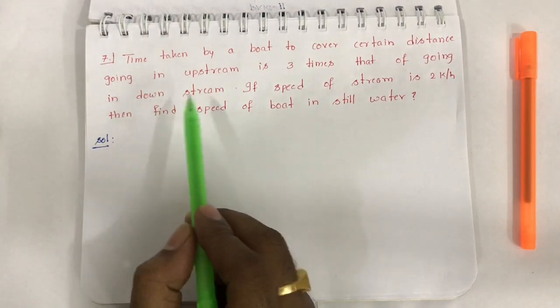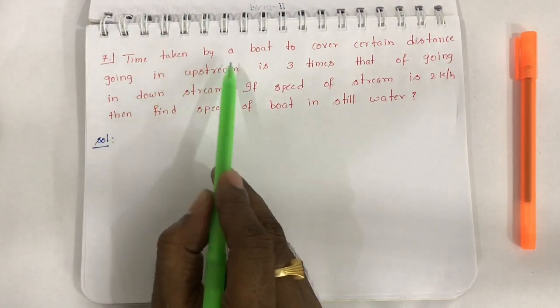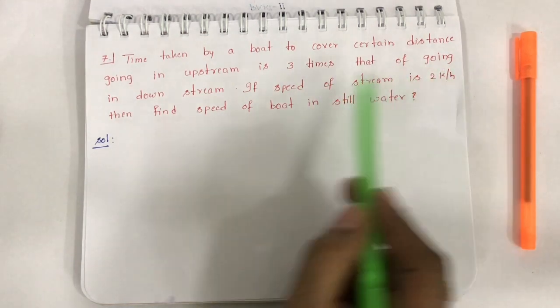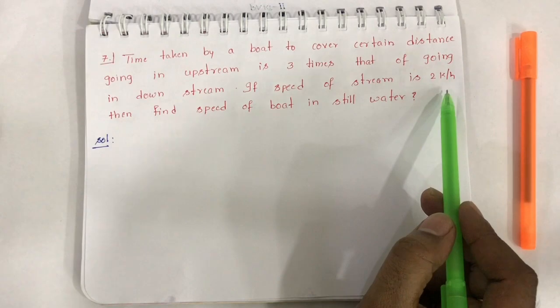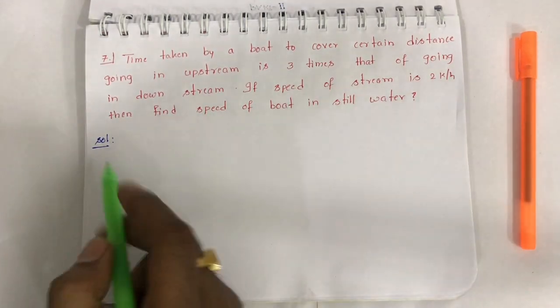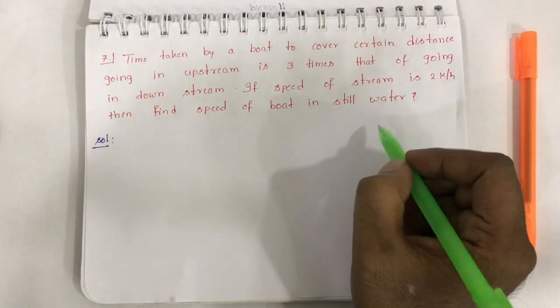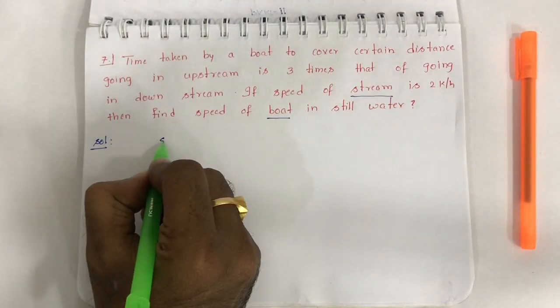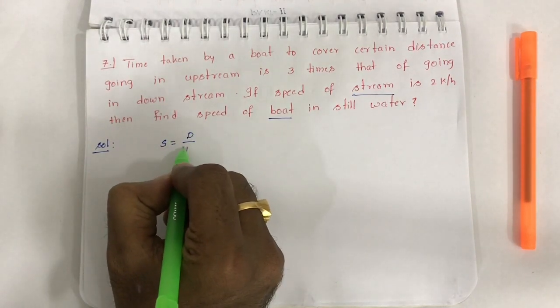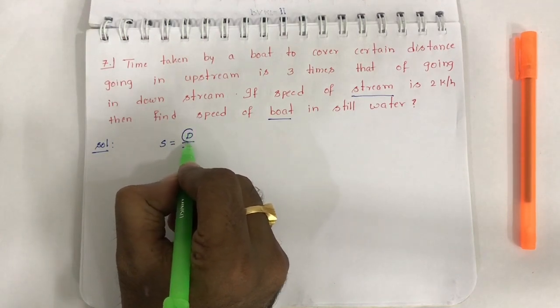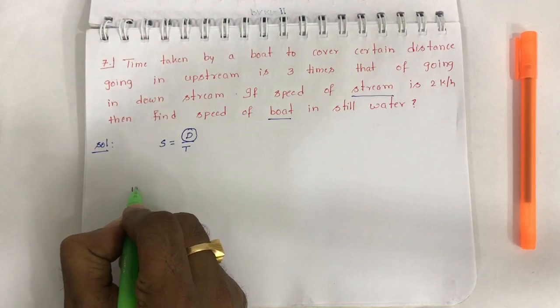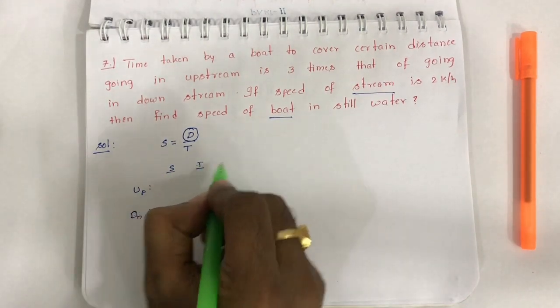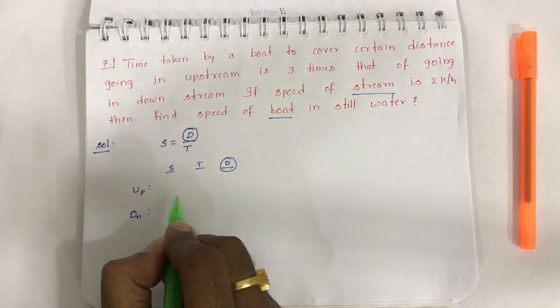Next question: The time taken by the boat to cover certain distance going in upstream is 3 times that of going in downstream. If speed of the stream is 2 kilometers per hour, then find speed of the boat in still water. Speed of the stream is given, speed of the boat we need to find. Distance is constant.